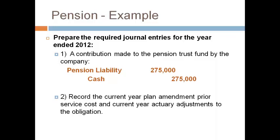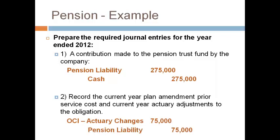Second, put the changes to the pension benefit obligation related only to the current year into OCI. In this example, the obligation increased due to a change in the factors used by the actuary. OCI is recorded as a loss and the pension liability increases. It is important to label the OCI by what it is related to, as the amounts for each type of OCI must be separately tracked and reported in the footnotes.